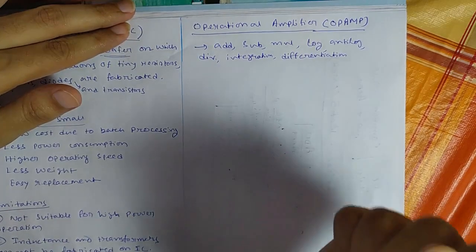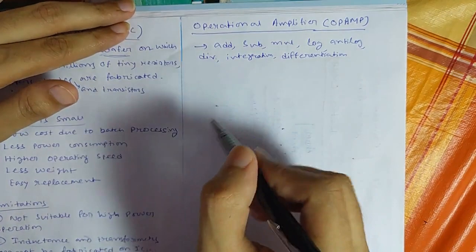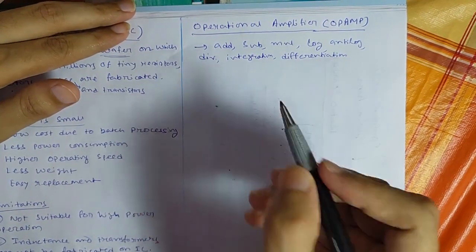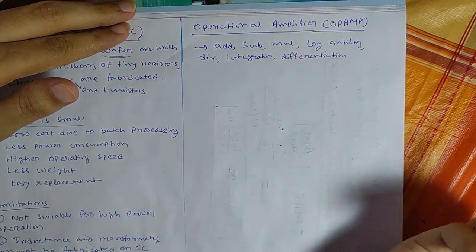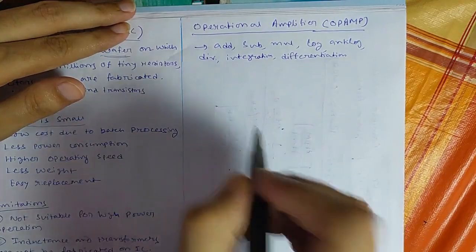So you can perform different kind of arithmetic operations using op-amp circuit. And remember these operations will be performed in analog form only. And there are different kind of logical operations like we can perform comparison and or not.